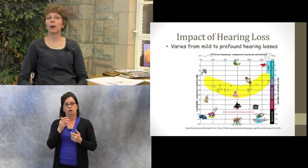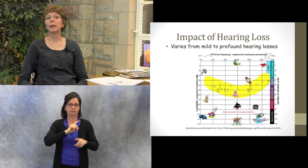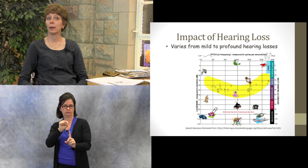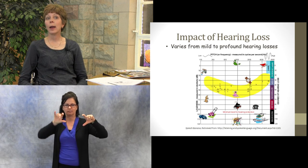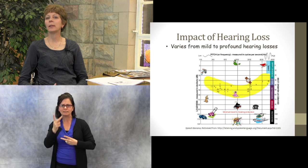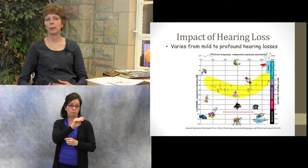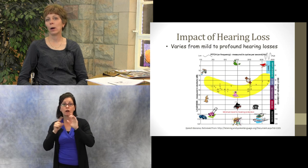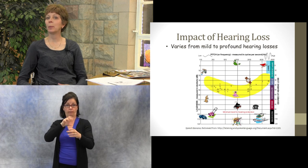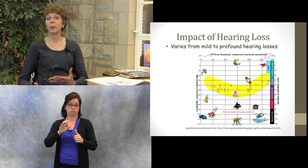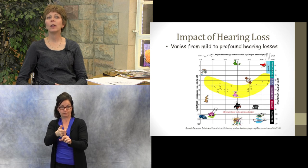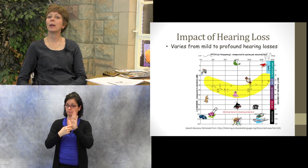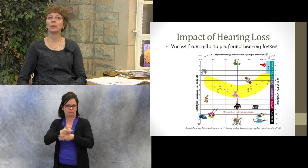A big part of my job when traveling itinerantly to different schools is really helping team members understand the impact of hearing loss. What I have here is a picture of the speech banana within the audiogram, and on the sides it shows the different degrees of hearing loss — where it falls for mild, moderate, severe, and profound. I bring this often to IEP meetings or initial meetings with teachers because sometimes a classroom teacher has their first experience with a deaf or hard of hearing student and doesn't understand what a severe hearing loss is. This audiogram helps them understand why some speech sounds are difficult to hear, so it has been a very useful tool.